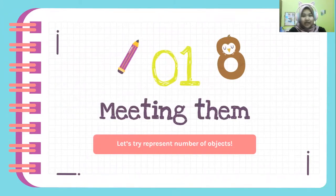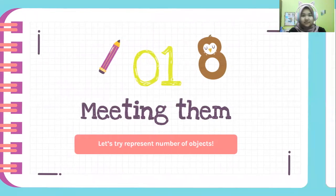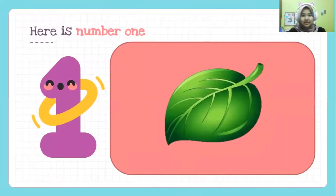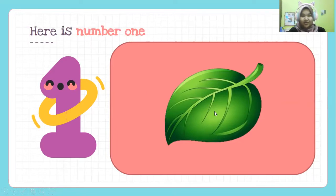Let's try representing numbers of objects. Here is number one. As you can see, here is number one. One represents one leaf. One leaf. One leaf.